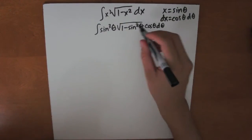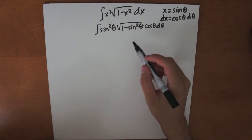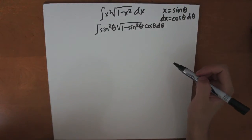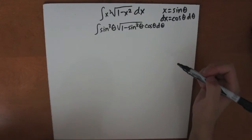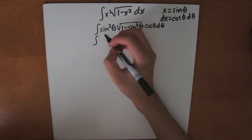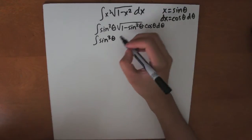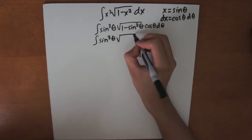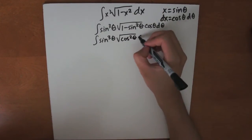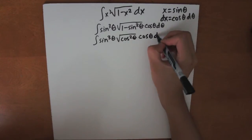So now let's get rid of the square root. Using the trig identity, 1 minus sine squared theta is equal to cosine squared theta. So this becomes the integral of sine cubed theta times the square root of cosine squared theta times cosine theta d theta.